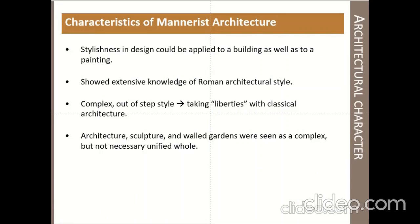Characteristics of Mannerist architecture: the stylistic design could be applied to both buildings and painting, so Mannerism was not limited to architecture but also applicable to painting and art of that period. It showed extensive knowledge of Roman architecture style, using those elements in very new ways. Complex out-of-step style — taking liberties with classical architecture. Architecture, sculpture, and walled gardens were seen as complex but not necessarily unified wholes, so gardens, porticoes, and garden walls were also designed in Mannerist style.